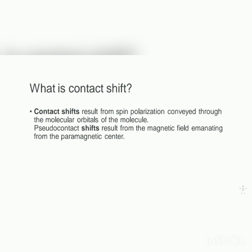What is meant by contact shift? Contact shift results from spin polarization conveyed through the molecular orbitals of the molecule. Pseudo-contact shifts result from the magnetic field emanating from the paramagnetic center. When we consider contact shift, we can classify contact shift into two categories.